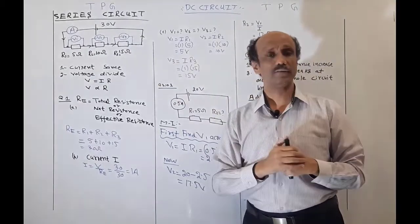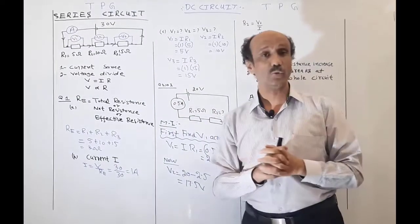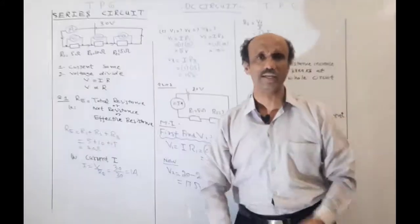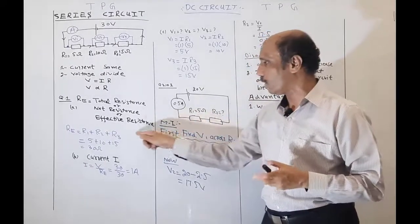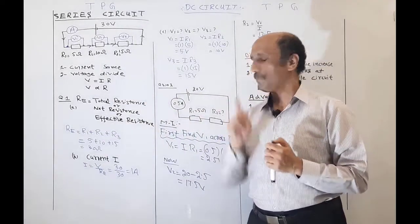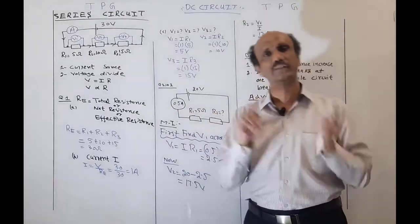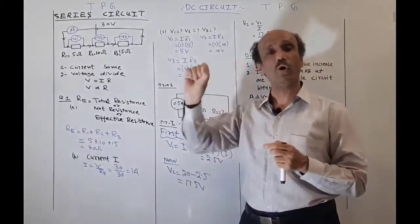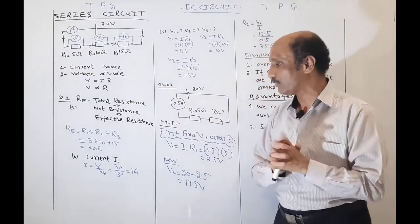The first question commonly asked is: what is the total resistance, net resistance, or effective resistance? To calculate the total resistance in a series combination, you add all the resistances: 5 + 10 + 15 = 30 ohm. This is the total or effective resistance.